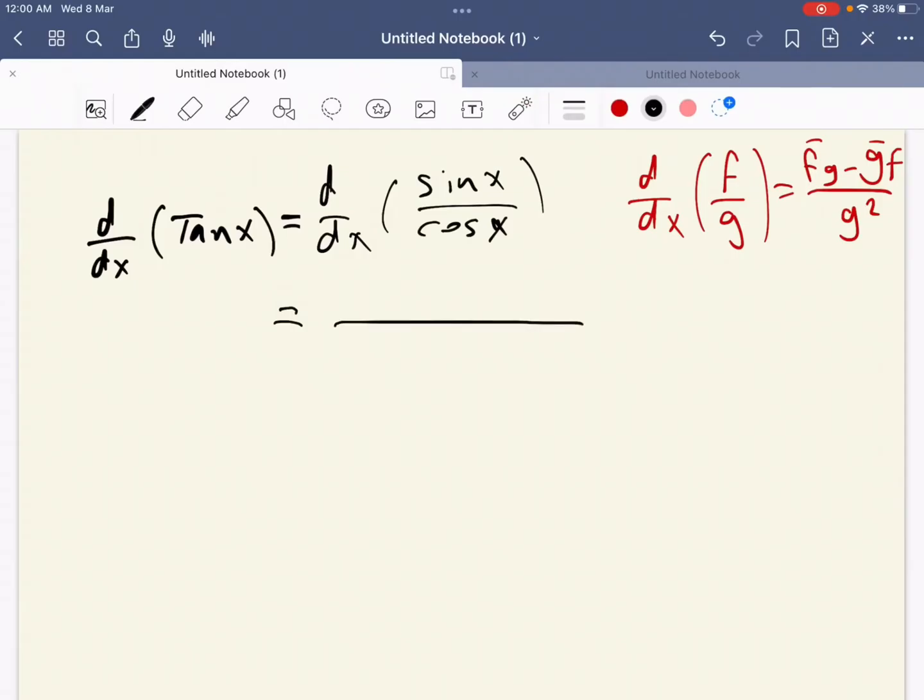It equals the derivative of the numerator, which is cosine x, times the denominator, which is cosine x.